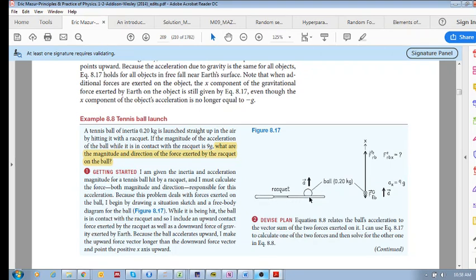Here we have a tennis ball being hit by a racket straight up. They give us the magnitude of the acceleration of the ball. So the question is what are the magnitude and direction of the force exerted by the racket on the ball?